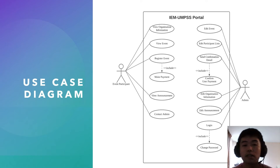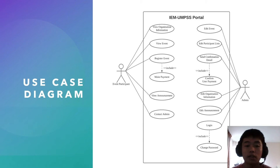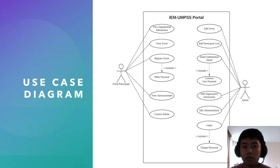For the use case diagram, we can see that there are two actors: event participant and admin. For the event participant, they can access the IEM-UMPSS portal to view organization information, which contains a brief introduction of the organization and what they do. Furthermore, they can also view events from the portal to view event details, whether current or upcoming.